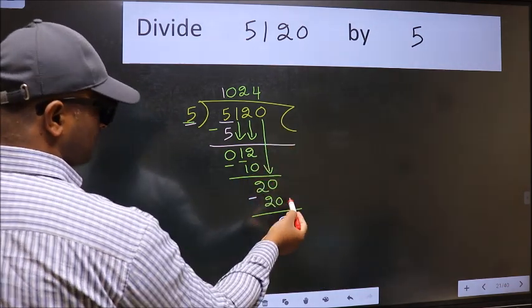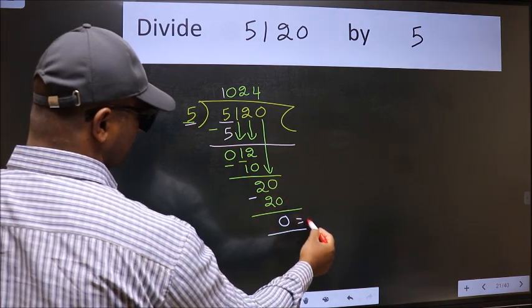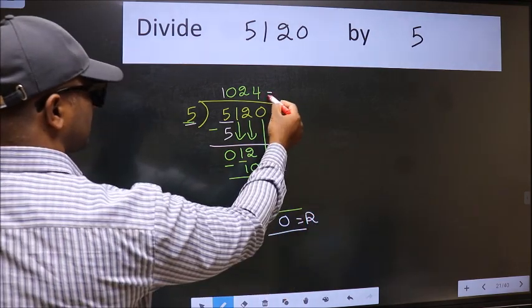No more numbers to bring it down. So we stop here. This is our remainder and this is our quotient.